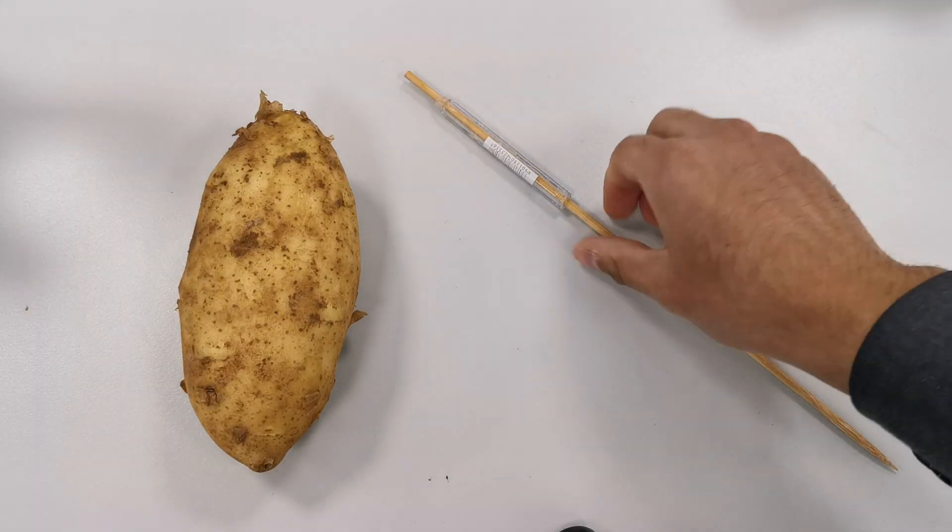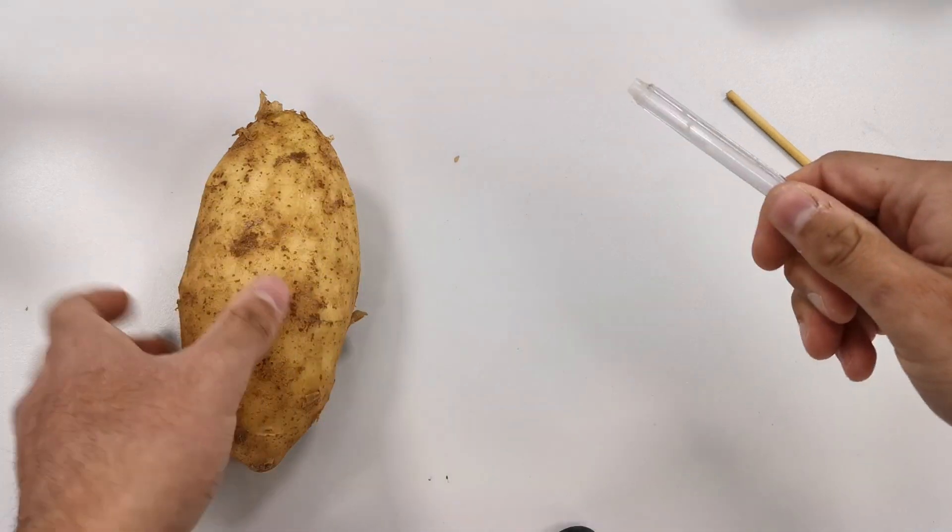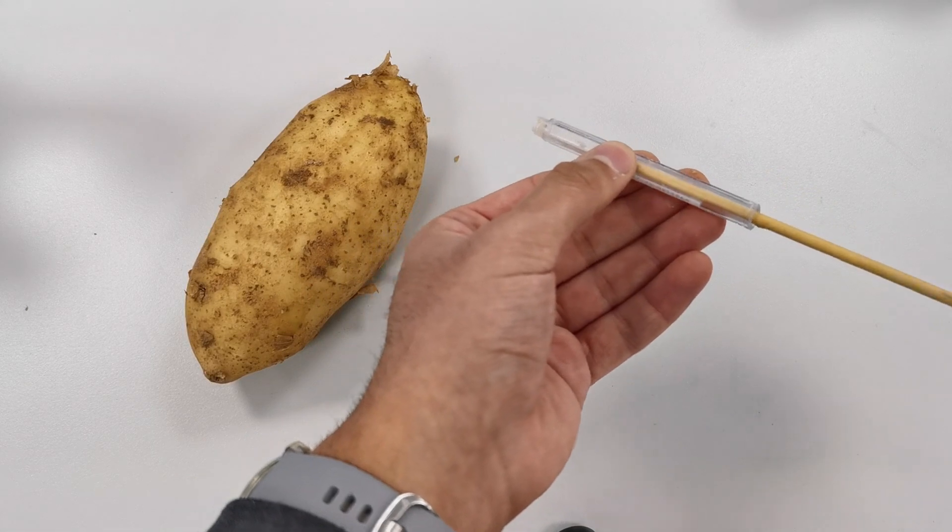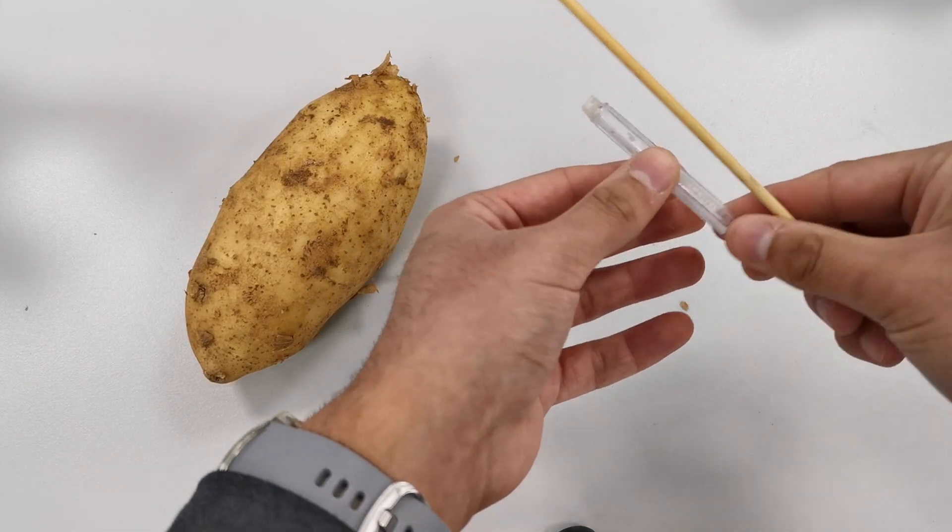We're going to start by pushing the potato borer through the potato to make a cylinder and then removing the potato cylinder from the borer by using the stick to push it through.